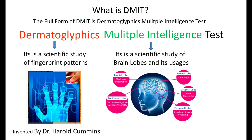The main function of the frontal lobe is thinking and imagination. The prefrontal lobe functions are executive and cognitive functions. The parietal lobe functions are kinesthetic, related to feelings. The occipital lobe's main function is visual processing. The temporal lobe's main functions are sound and speech recognition. Multiple intelligence was invented by Dr. Howard Gardner.